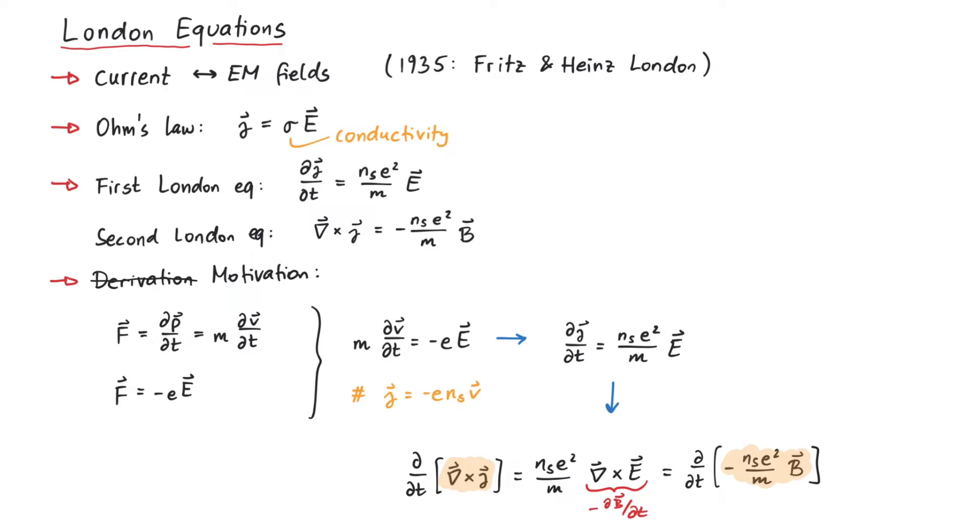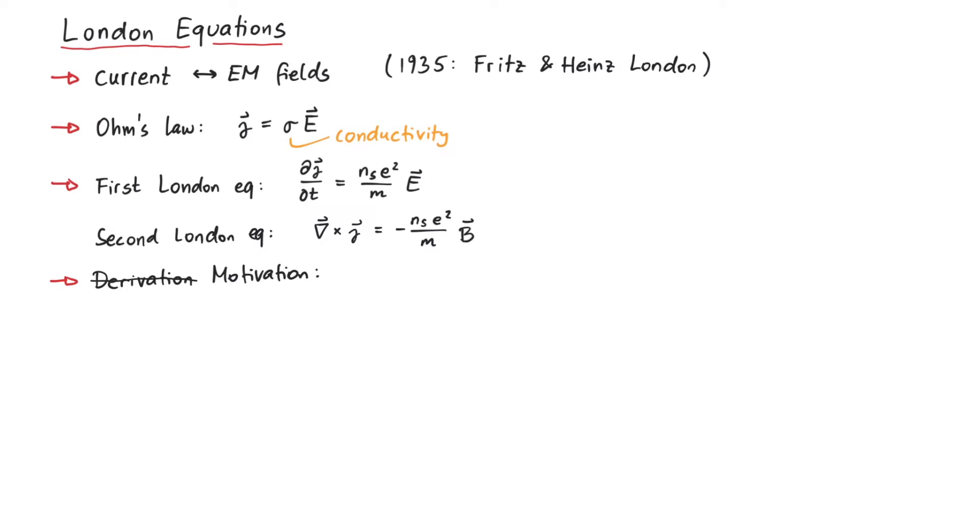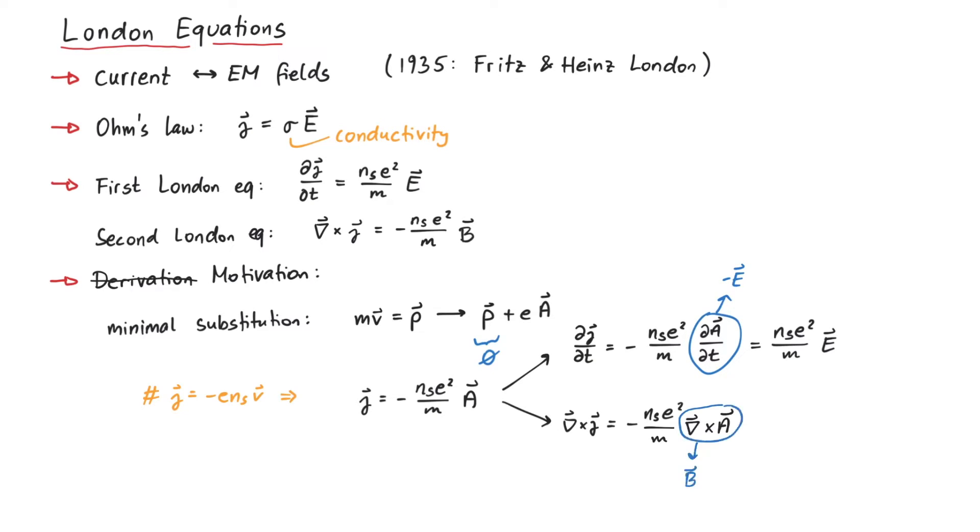However, this calculation is not rigorous, since we cannot assume a uniform electric field for our case. The second way works by considering quantum mechanics. In quantum mechanics, a coupling to electromagnetic fields can be implemented by doing a so-called minimal substitution, that is, we replace the momentum that equals M times V with P plus Ea, where A is the vector potential. We now assume that the ground state of the system has no momentum, therefore we can write the current density J in terms of A. Now, taking the time derivative leads to the first London equation, whereas taking the curl leads to the second one. The downside here is that we cannot in general assume that the wave function of the system keeps its ground state property of no momentum.